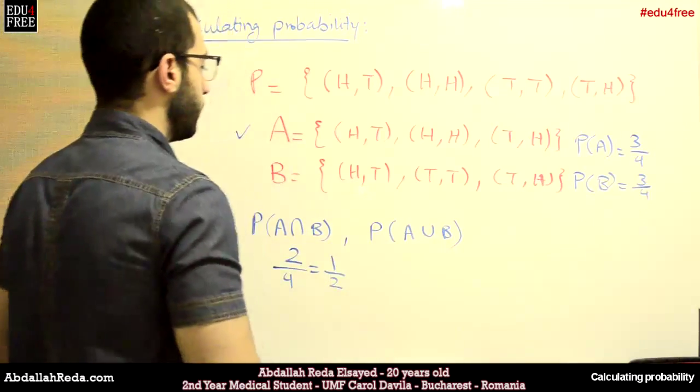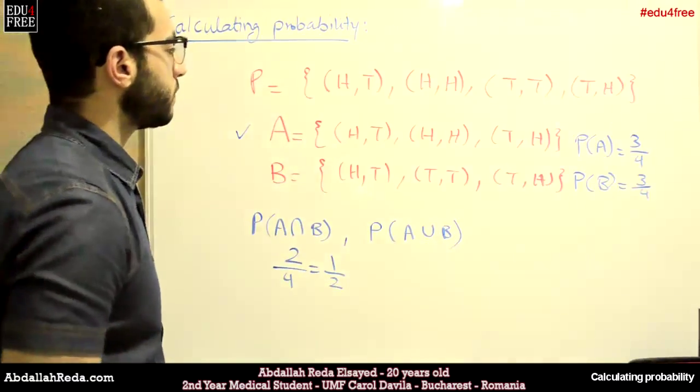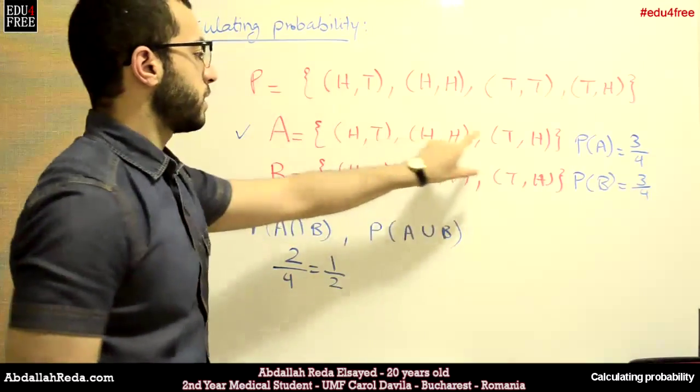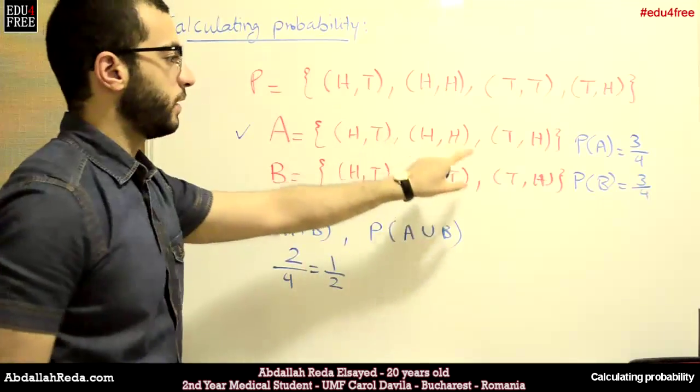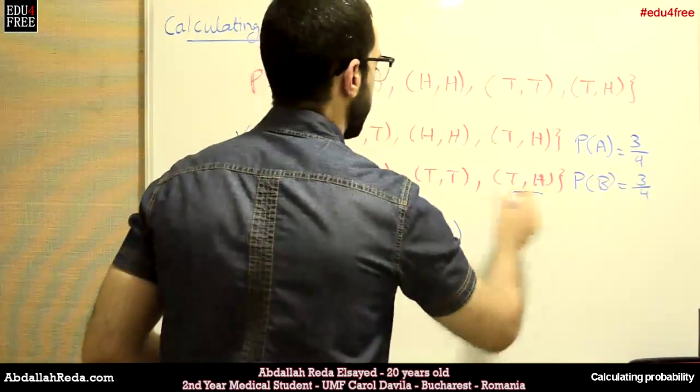Let's go to the other one, which is A union B. If we sum up all the possibilities of both events together, we will find out that there are 6. But they are not 6 because we have two elements here repeated.